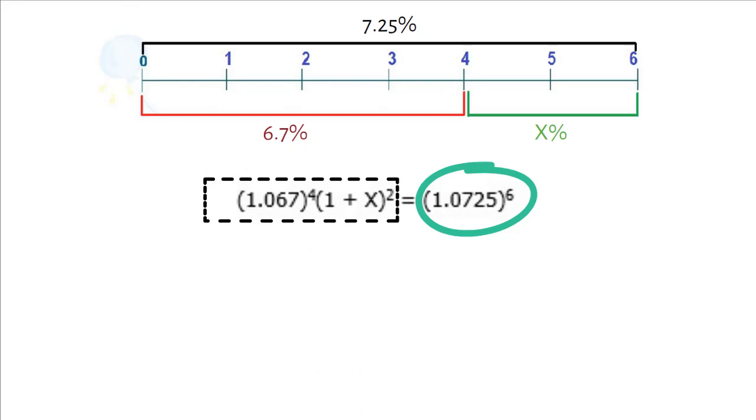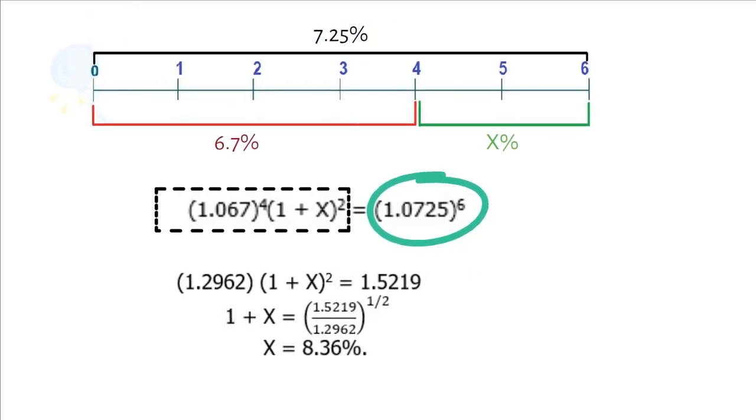amount reinvested at the rate of X% for the 2 years. When you solve this equation, you find the interest rate on 2-year securities 4 years from now is 8.36%.